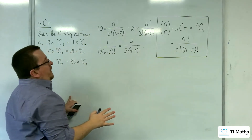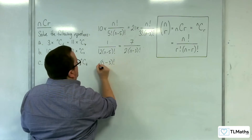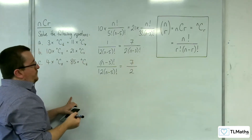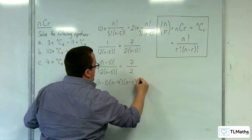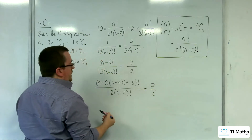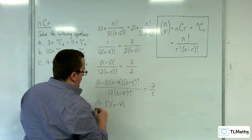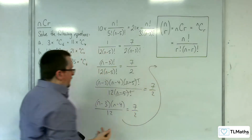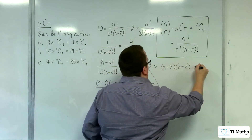Multiplying both sides by (n minus 3) factorial — the larger of the two — we get (n minus 3) factorial over 12(n minus 5) factorial equals 7 over 2. Now (n minus 3) factorial equals (n minus 3)(n minus 4)(n minus 5) factorial, so the (n minus 5) factorial cancels. We get (n minus 3)(n minus 4) over 12 equals 7 over 2. Multiplying both sides by 12 gives (n minus 3)(n minus 4) equals 42.